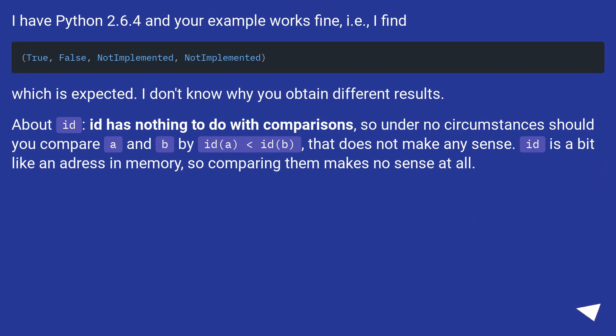I have Python 2.6.4 and your example works fine, i.e., I find True, False, NotImplemented, NotImplemented, which is expected. I don't know why you obtain different results.